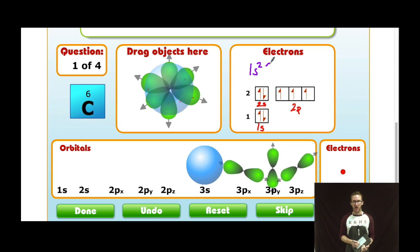In my 2s sub-level, I've also got two electrons, 2s2. In my 2p sub-level, I've got three electrons spread across my three 2p orbitals. So 2p3.